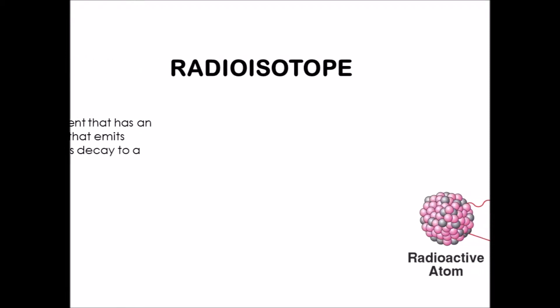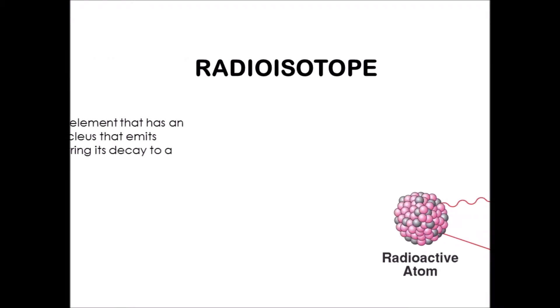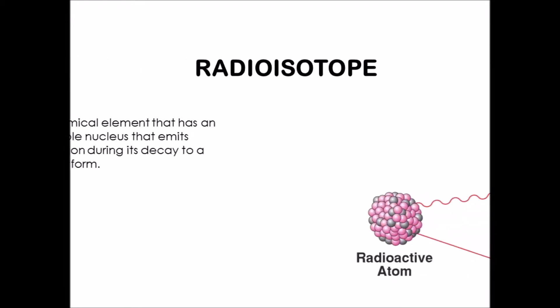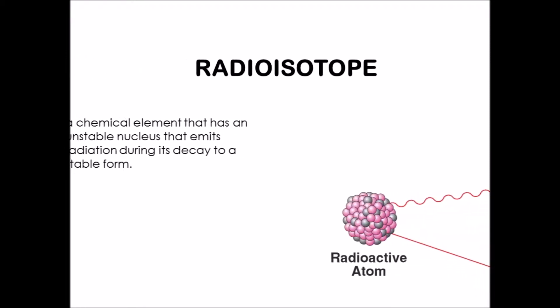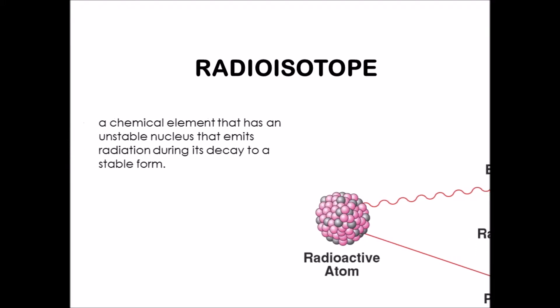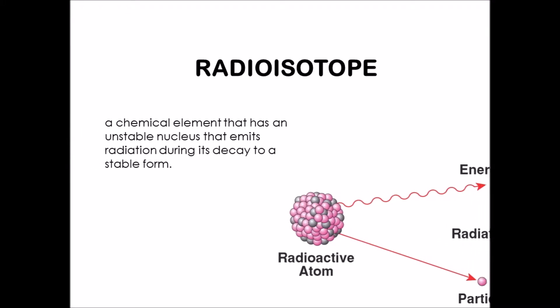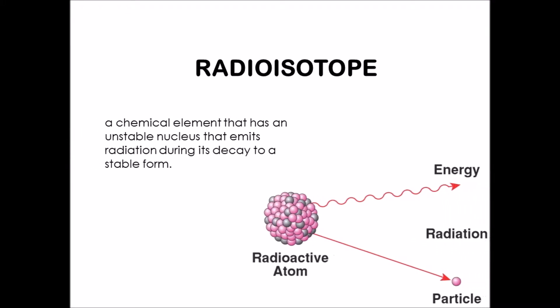Welcome Year 9 OLMC girls. Today I will be talking about a radioisotope of my choice. A radioisotope is simply a chemical element that has an unstable nucleus that emits radiation during its decay to a stable form.